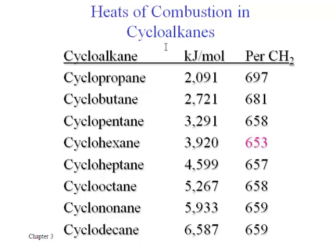The number for cyclohexane is highlighted: 653. That's the lowest value in the last column. Because cyclohexane gives up less energy per CH₂ unit in its ring, that identifies it as the most stable cycloalkane in this list. The ones preceding cyclohexane with smaller ring sizes have higher energy values, so they are less stable.